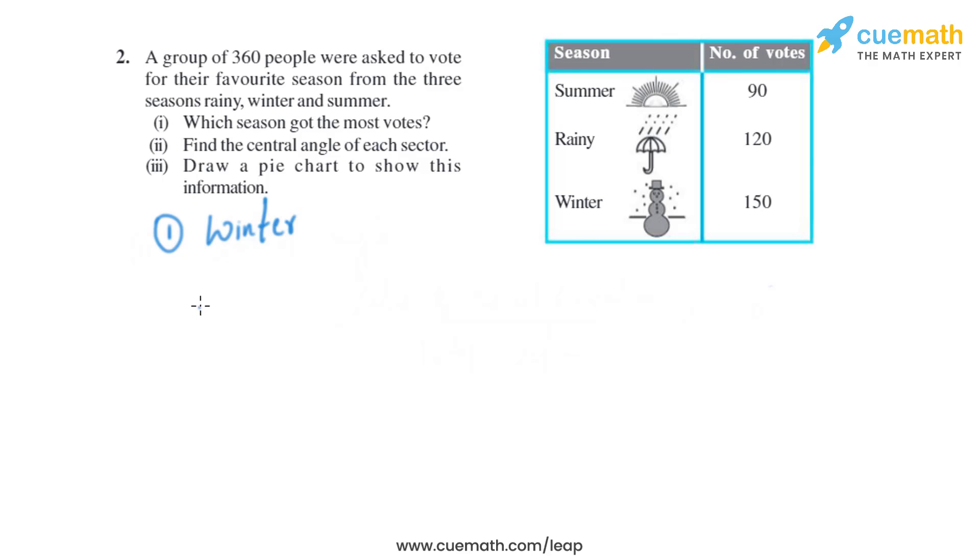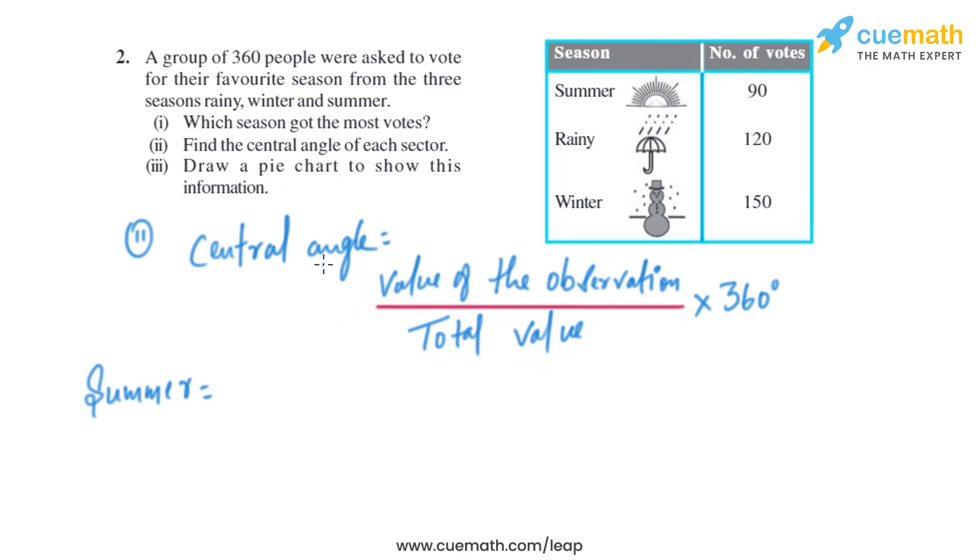Now let's have a look into the second part. It is given: find the central angle of each sector. We can find central angle using this formula: value of the observation divided by total value multiplied by 360 degrees.